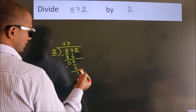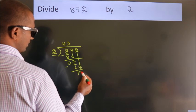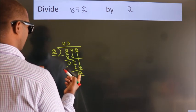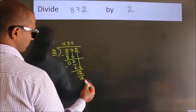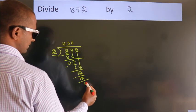After this, bring down the beside number, so 2 down, so 12. When do we get 12? In 2 table, 2 sixes, 12. Now we subtract, we get 0.